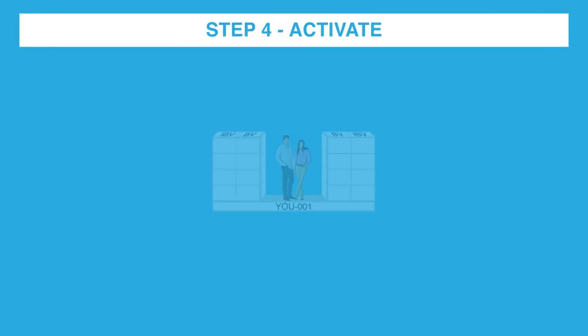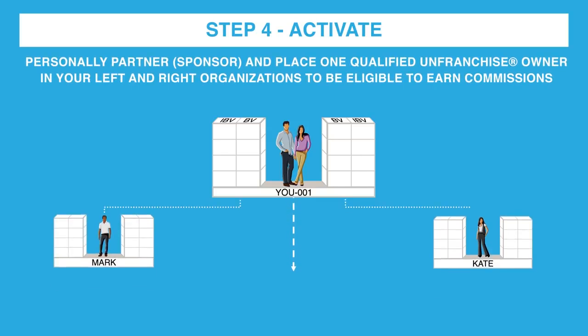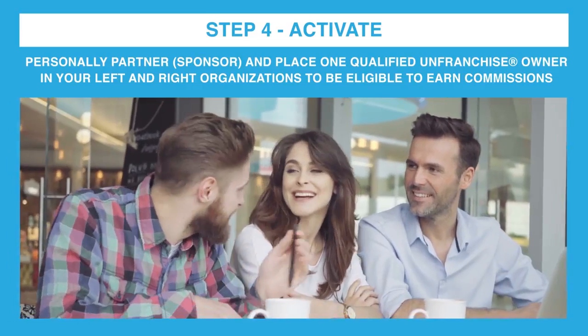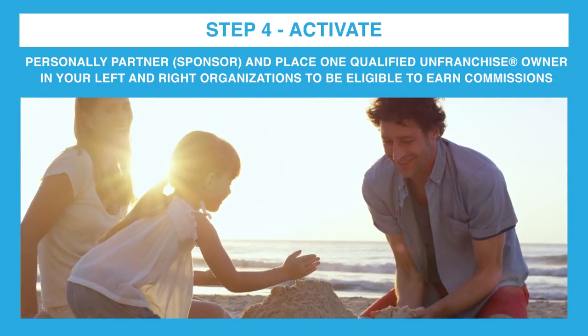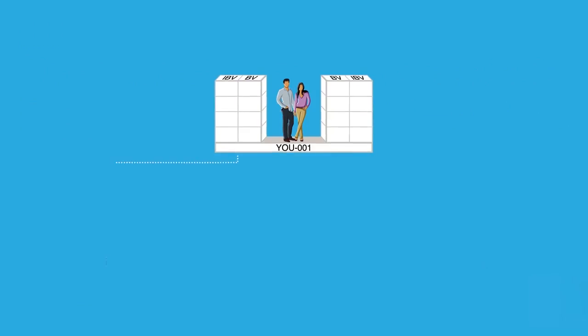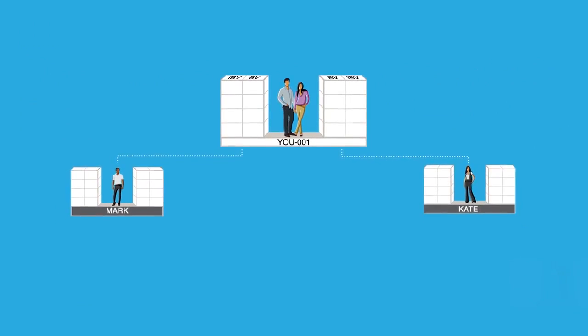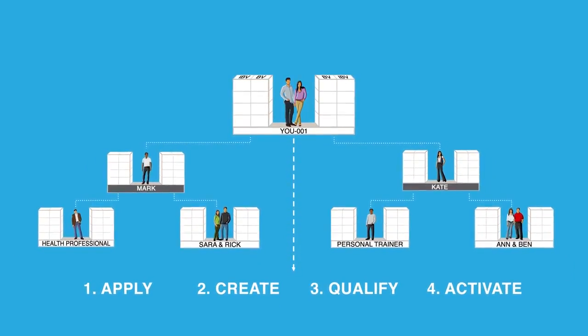Step 4: Activate. Personally partner with and place one qualified unfranchise owner in your left and right organizations. Activating expands points of distribution and makes you eligible to earn commissions and bonuses. Can you think of anyone who would like to create an additional source of income — someone who desires time and financial freedom, or who would like to own a shop.com site and create their own shopping annuity? For example, Mark and Kate. We simply teach Mark and Kate to apply, create, qualify, and activate their own unfranchised business.